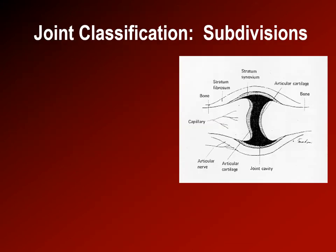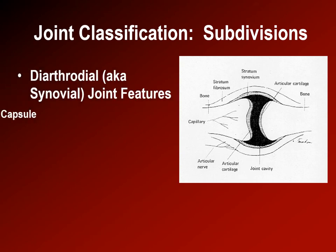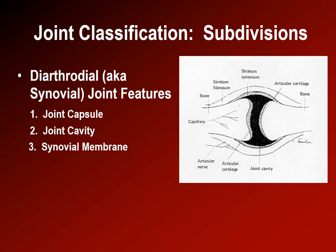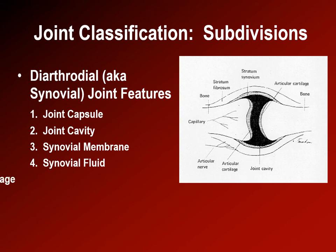All freely movable or diarthrodial joints have several features, including a joint capsule made of two parts, a joint cavity — the space within the joint capsule between the bones — and a synovial membrane, which is the inside of the joint capsule. The synovial membrane is very vascular and secretes the synovial fluid.